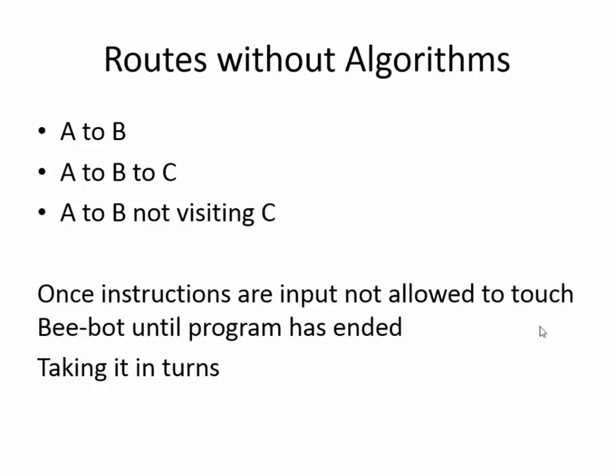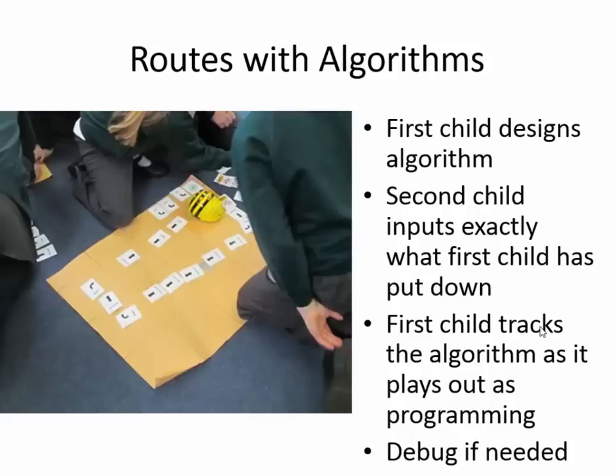One key rule we gave the children was that once they input a set of instructions into Bee-Bot, they were not allowed to touch it until the program had ended. This came about because we noticed many children punching in instructions very quickly without thinking about their routes. By making them wait until Bee-Bot had completed all instructions, it made them think much more clearly about their sequence - you only need Bee-Bot to go wandering across the class once to encourage you to think more carefully.